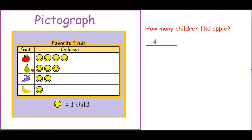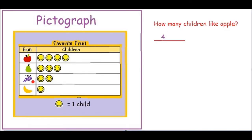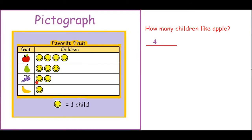Again, we look at our smiley faces. And remember, one smiley is equal to one child. So count: one, two, three — three children like pear. How many children like grape? One, two — two children like grape. How many like bananas? One child likes bananas.